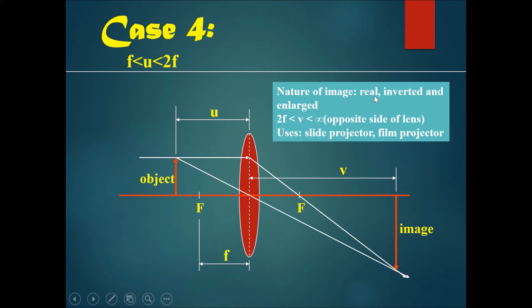The nature of the image is real, inverted, and enlarged. This image is actually bigger than the object. And the image location will be beyond 2f, from 2f to infinity. Now you have seen all of this in your classrooms, most likely.